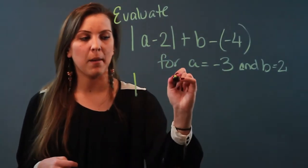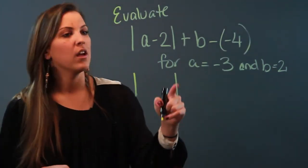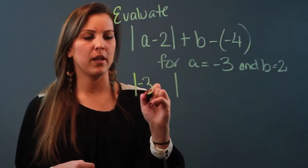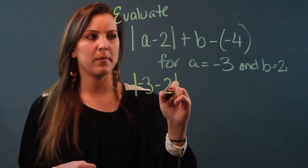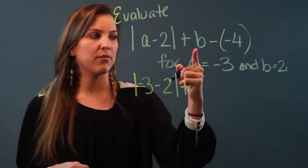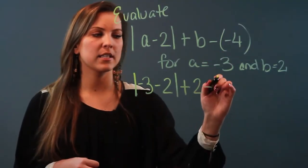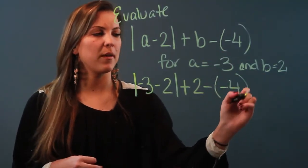Everything else needs to be copied down exactly the same. Instead of writing a, I'm going to substitute it with -3, bring down the minus sign, bring down the 2. Plus, instead of writing b, I'm going to write 2, bring down the minus, bring down the parentheses, the -4.